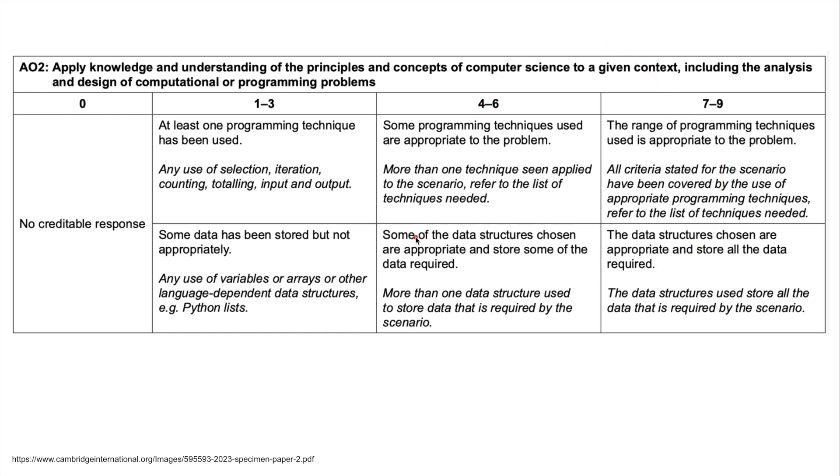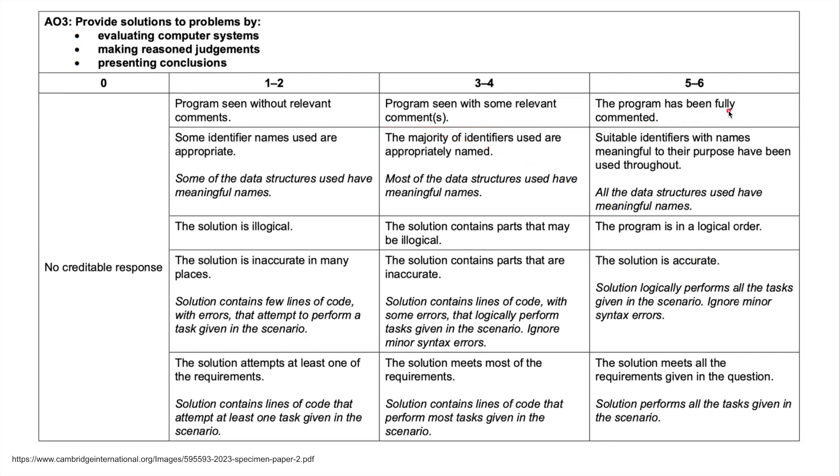The data structures used store all the data required by the scenario, basically the arrays. Then AO3: the program has been fully commented, suitable identifiers with names meaningful to the purpose have been used throughout. You're picking up marks if you name any variables, arrays, constants properly. All the data structures used have meaningful names. The program is in a logical order. The solution is accurate. The solution meets all the requirements given in the question. That is how we would get 15 marks on this task.